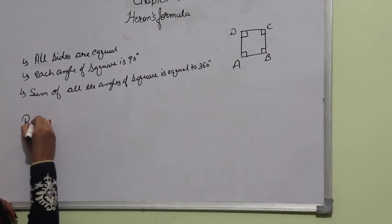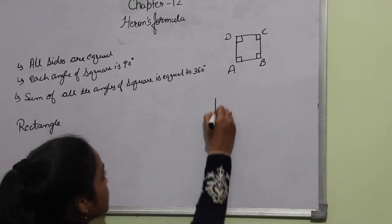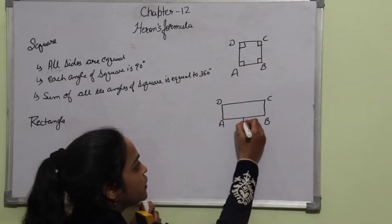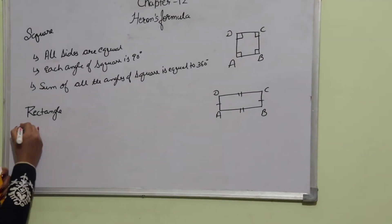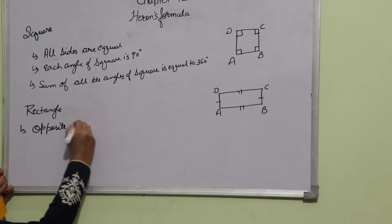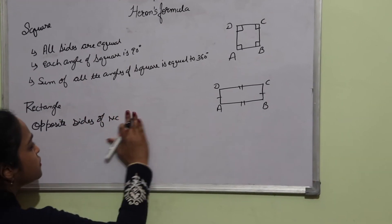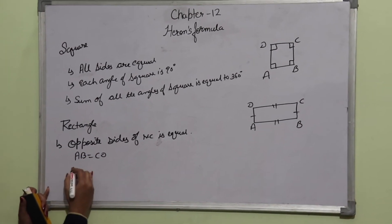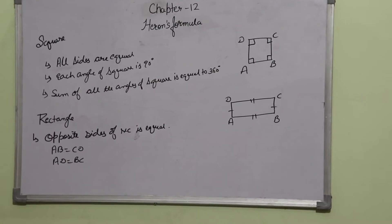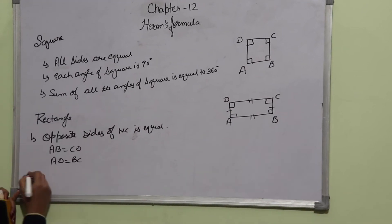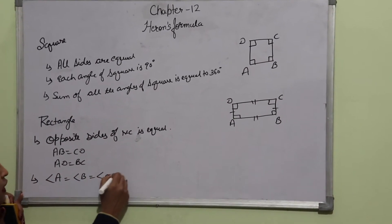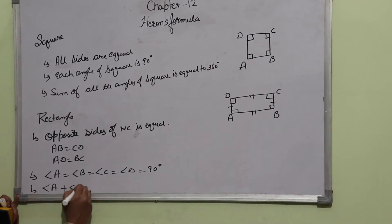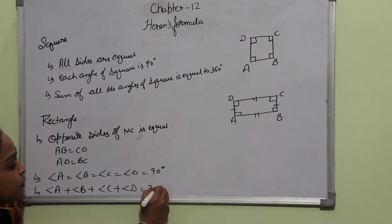Now come to rectangle. This is rectangle ABCD. In a rectangle, two sides are equal and the other two sides are equal — that means opposite sides of the rectangle are equal. Here, AB is equal to CD and AD is equal to BC. Each angle is 90 degrees, meaning angle A, angle B, angle C, angle D are each equal to 90 degrees. The sum of all the angles of the rectangle is 360 degrees.